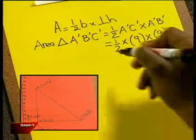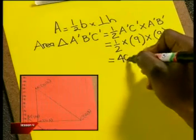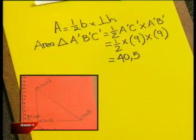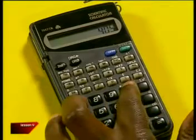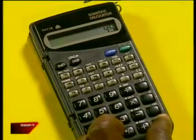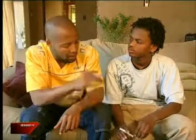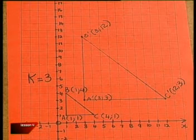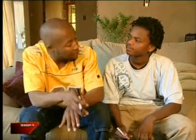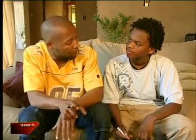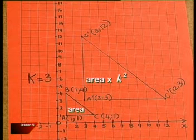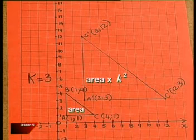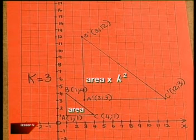Now what about the area of its enlargement? The area of triangle A'B'C' will be half times this height, which is 9, and this base, which is also 9. And I get 40.5 square units. 40.5 divided by 4.5 is exactly 9. So the area of the enlarged triangle is 9 times bigger than the area of the original triangle. Can you see a relationship between area and the scale factor? The scale factor is 3, so the area is 3 squared, which is 3 times 3. The area of the enlargement of a polygon can be described by the square of the scale factor. So if the scale factor is k, you can find the area of the original shape and then multiply by k² to get the area of the enlargement through the origin.